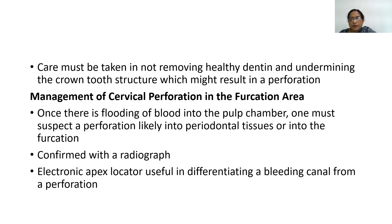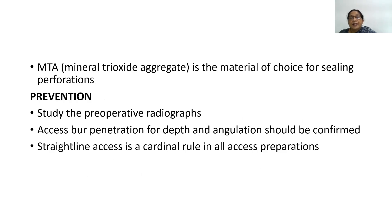In the management of cervical perforation: once there is bleeding that blends into the pulp chamber, one must suspect a perforation into the periodontal tissues. Confirm with a radiograph. Electronic apex locators are also useful in differentiating a bleeding canal from a perforation. MTA — mineral trioxide aggregate — is the material of choice for sealing perforations. Prevention includes studying preoperative radiographs and always achieving straight-line access, which is the cardinal rule.